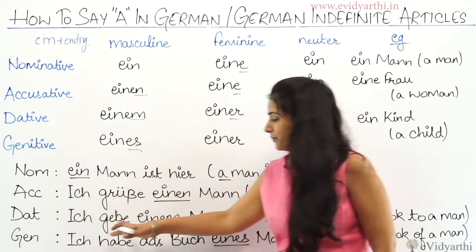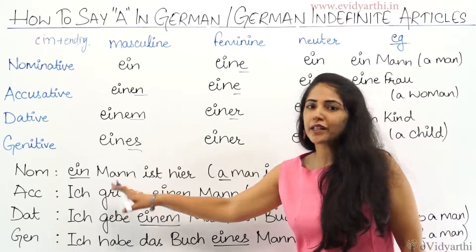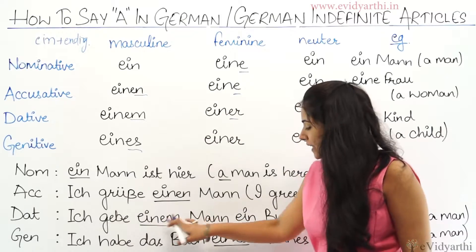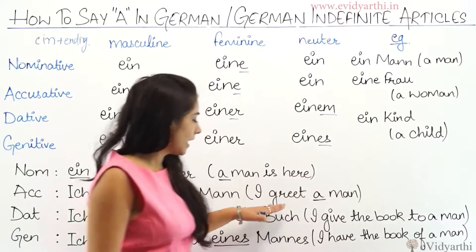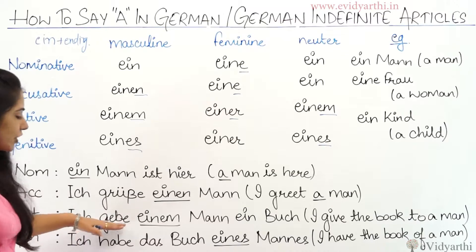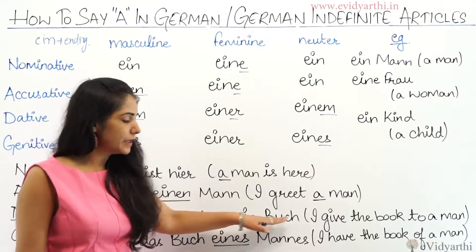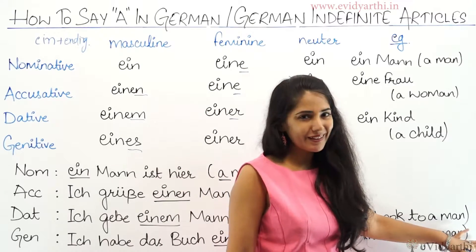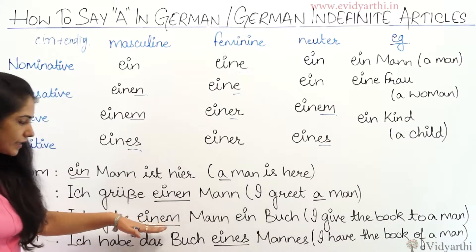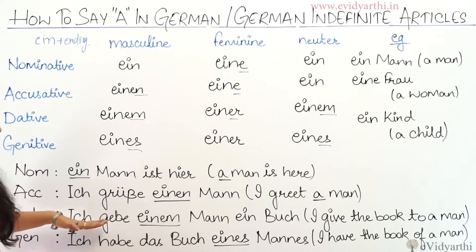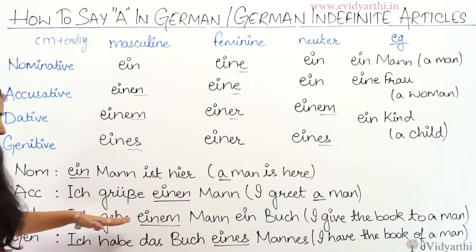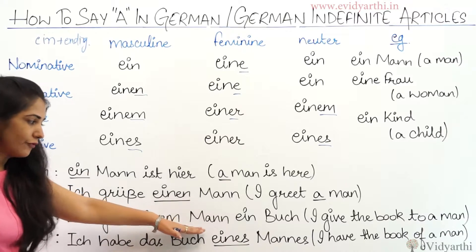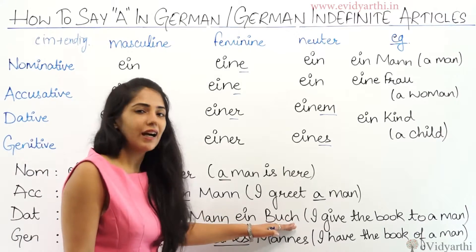Third, dative. Dative is the indirect object. 'Einem Mann' — 'I give a man'. In this sentence, 'ich' is nominative, 'einem Mann' is the indirect object so it is dative, and 'ein Buch' is accusative.